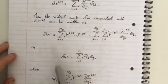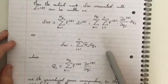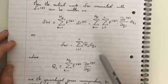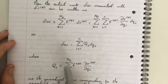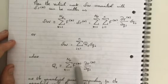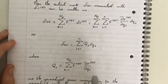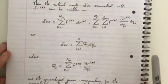Or we can write it as delta W equals the sum of j equals 1 to n of Qj delta Qj, where Qj is equivalent to the sum of k equals 1 to np of capital Fk multiplied by the partial derivative of Rk with respect to Qj. So I'll let that sink in. You can pause the video and just go over that quickly.